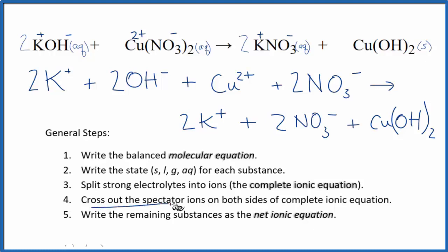Now we can cross out spectator ions. Spectator ions appear on both sides, in the reactants and then in the products. And since they're the same, we're not interested in them. We can just cross them out. I have 2K plus here in the reactants. 2K plus in the products. Cross them out.